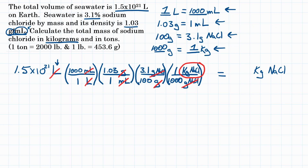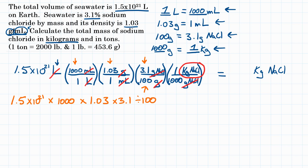In your calculator, put in 1.5 times 10 to the 21st. Multiply by the top of each conversion factor and divide by the bottom, skipping anything that's a 1. Multiply by 1,000, then by 1.03, then by 3.1, divide by 100, and divide by 1,000. Hit equals and you should get somewhere around 4.7895 times 10 to the 19th. Rounding to two significant figures, that's 4.8 times 10 to the 19th kilograms of NaCl.